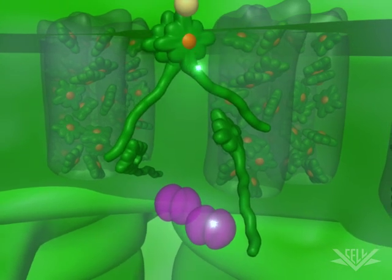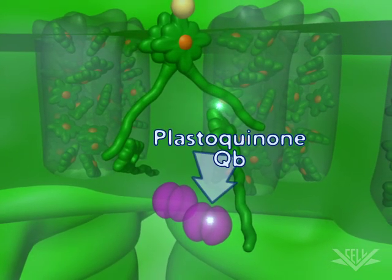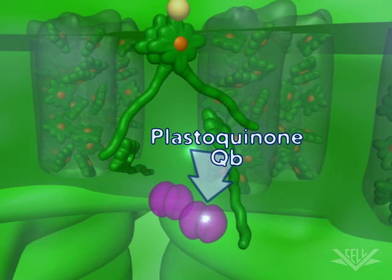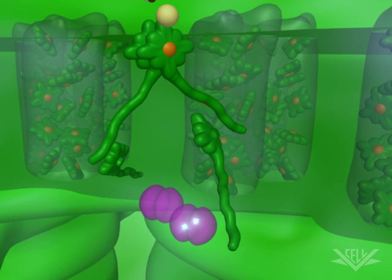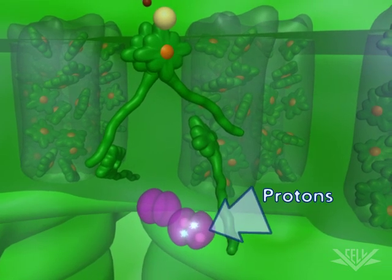Once excited, two electrons are transferred to plastoquinone QB, the first mobile carrier. In addition to the two electrons, QB also picks up two protons from the stroma.